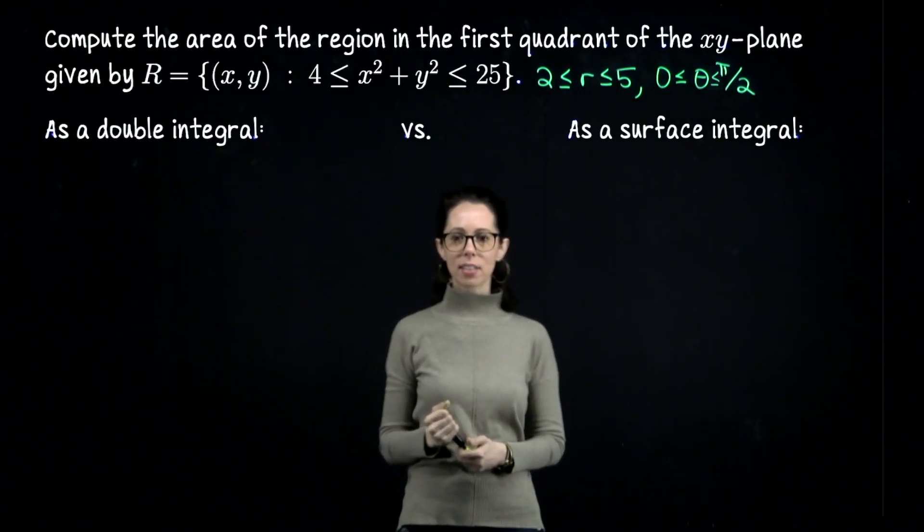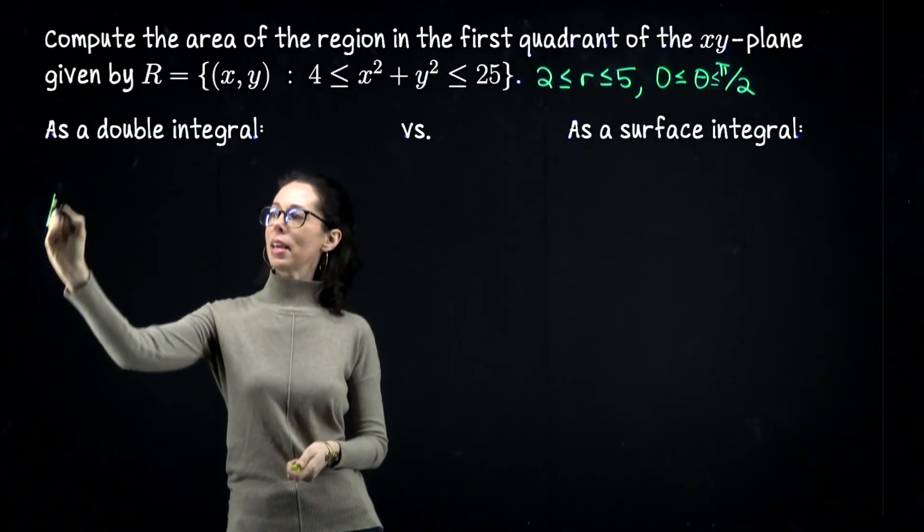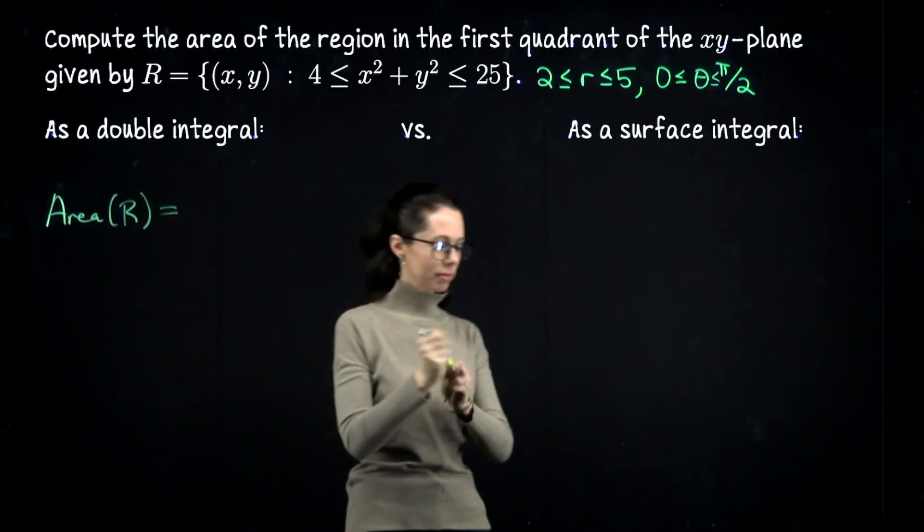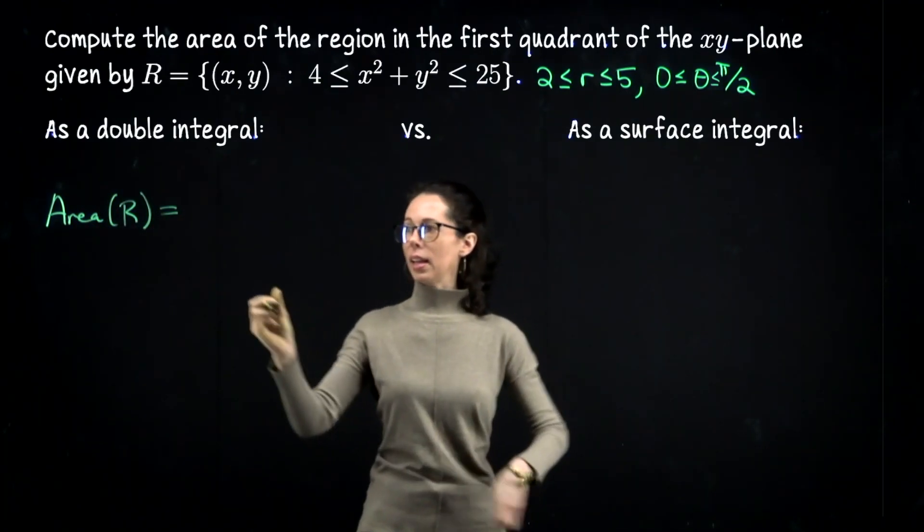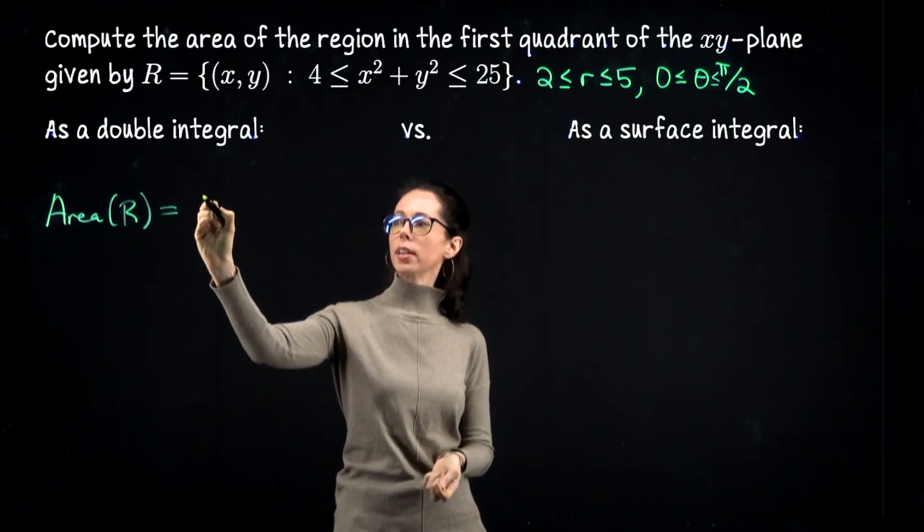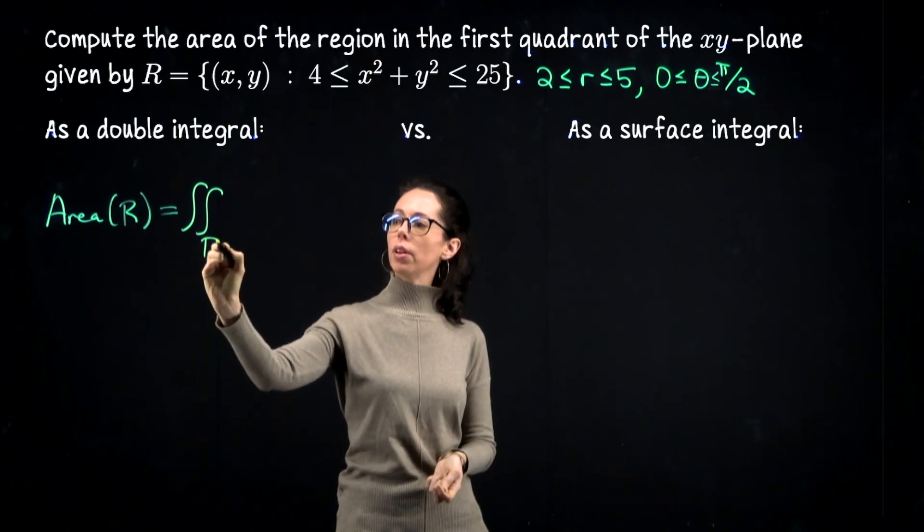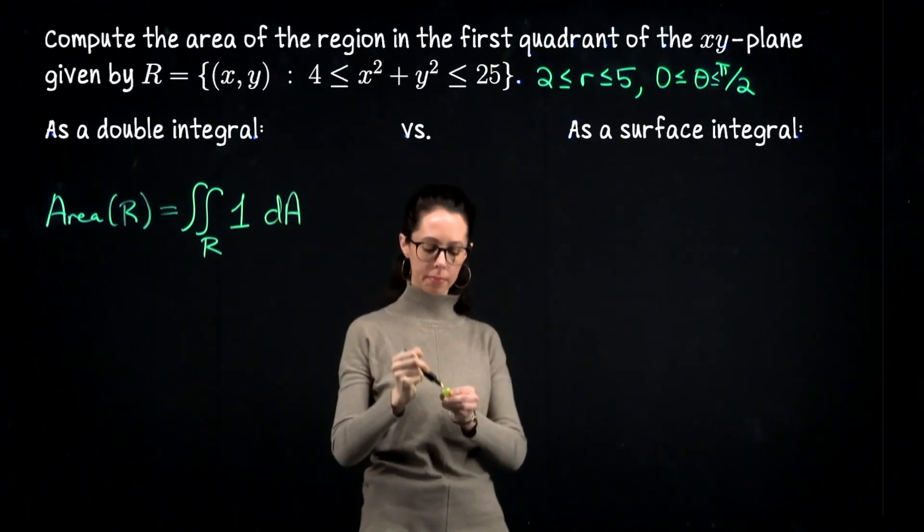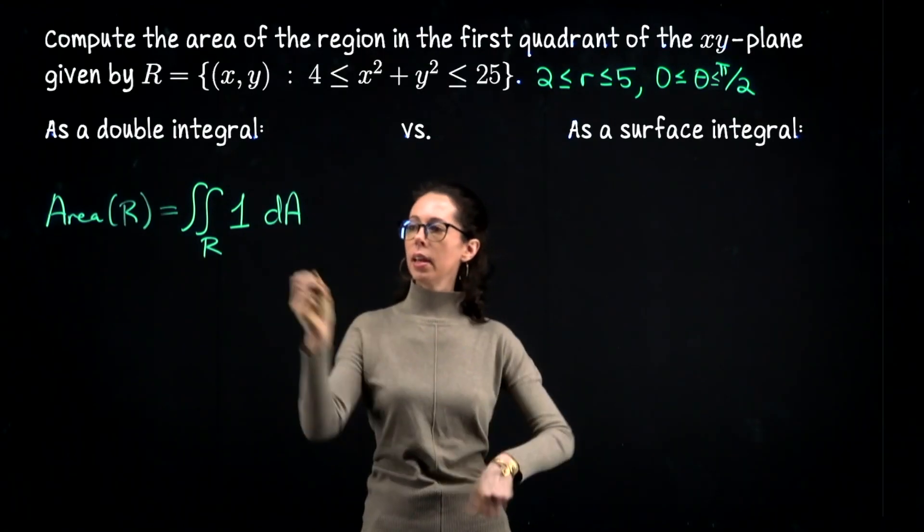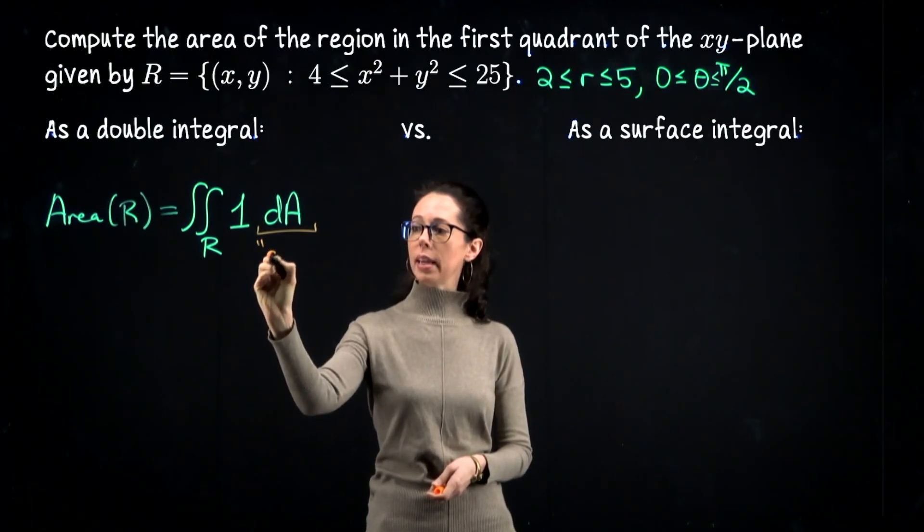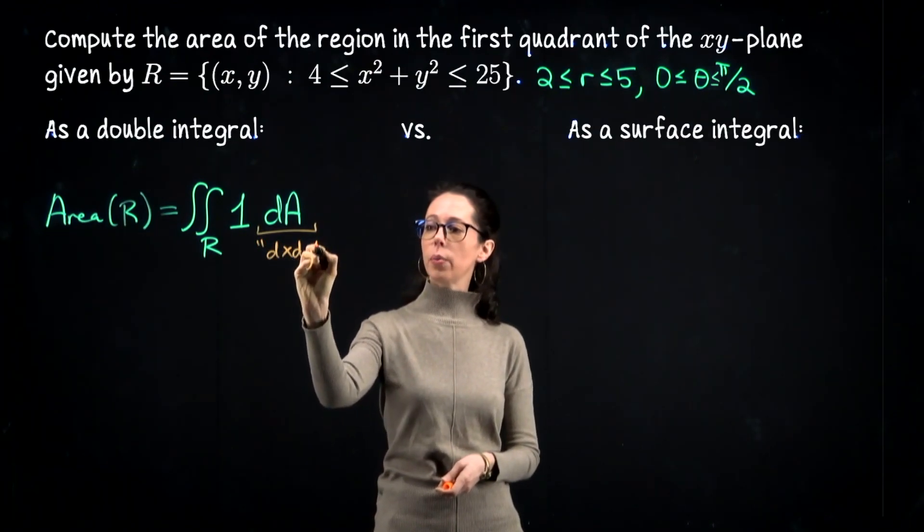Okay, let's knock this out first as a double integral. So we can say the area of this region is going to be the double integral - well actually first let me write down a general expression. It's the double integral over R of 1 dA. And when I write dA here, I'm really referring to your standard rectangular differentials, so this could be like dx dy or dy dx.